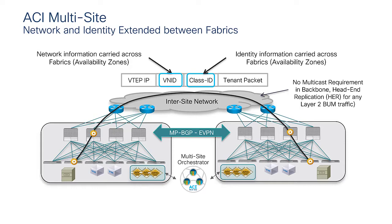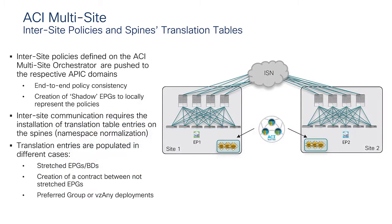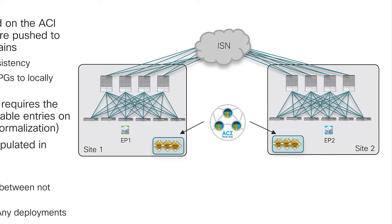Carrying this VNID and class ID information with every packet sent across sites enables consistent end-to-end layer 2 or layer 3 policy. However, these VNID and class ID values are always assigned locally by the APIC domain for each fabric connected to the multisite domain, meaning different APIC domains may assign different values to objects representing the same logical entity.